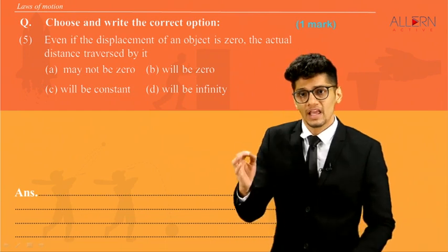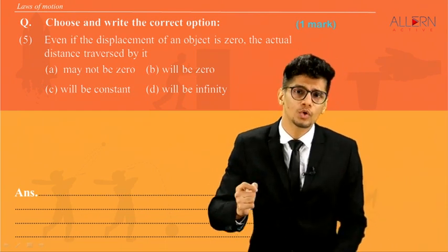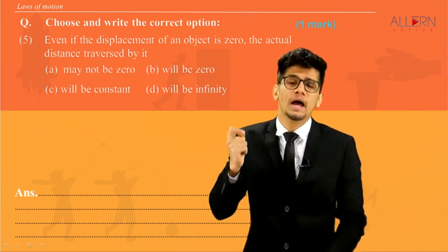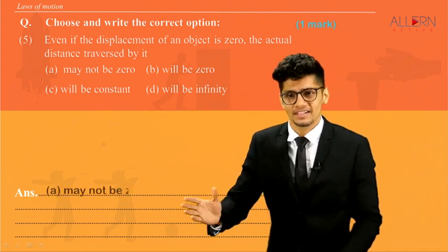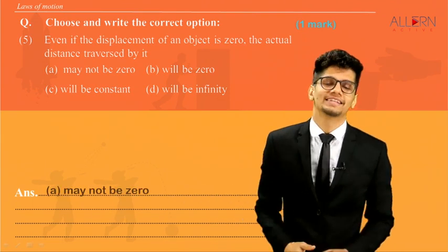Next question. Even if the displacement of an object is 0, the actual distance travelled might not be 0, right? So the answer will be may not be 0.